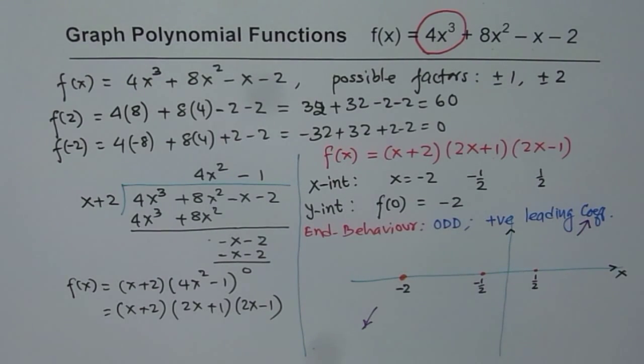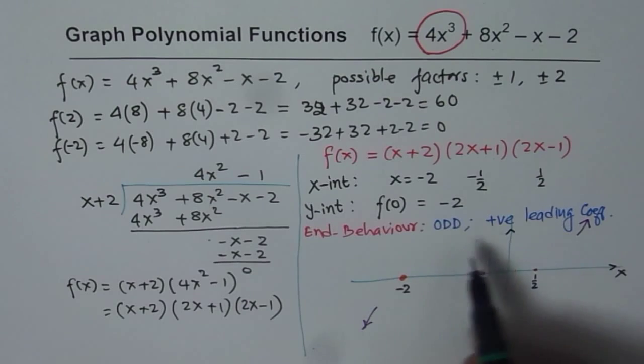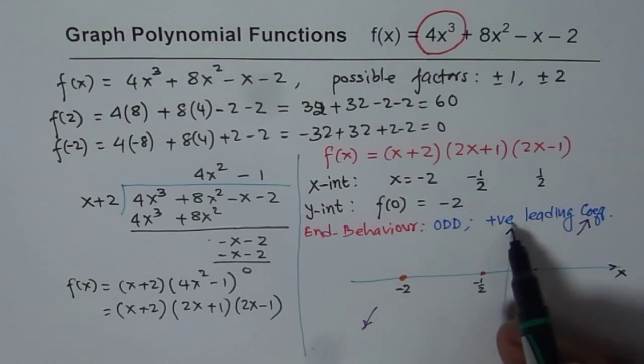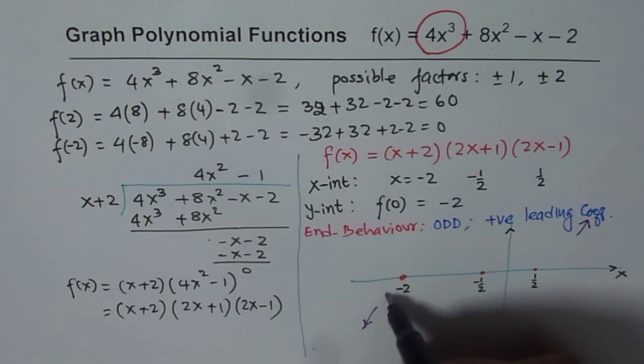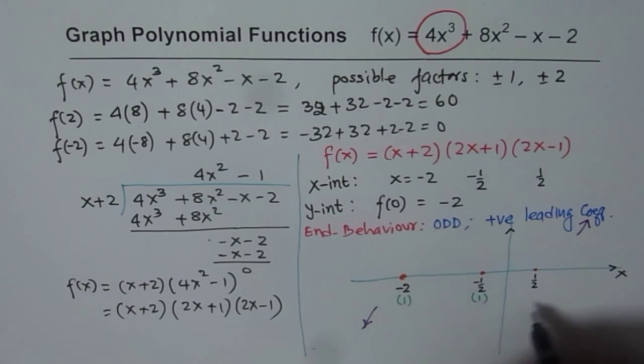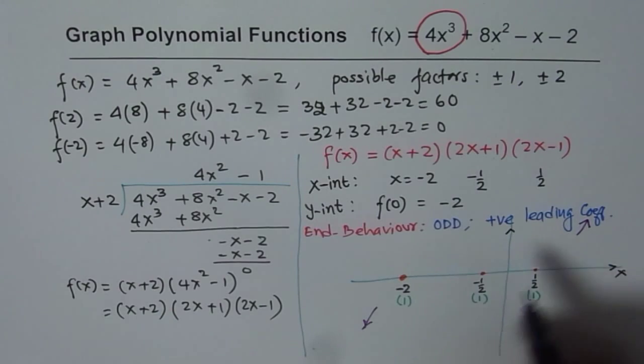Now, let's try to sketch the graph. To sketch the graph, what we will do is, we have to actually move from quadrant 3 to quadrant 1. That is how we have to move. Since odd degree, opposite ends, positive leading ends up in quadrant 1. So remember, when you move, you have to go straight from the zeros, because they are all linear zeros. So multiplicity is 1. Their multiplicity is 1. So you should not be turning. You have to just cross them. And that is how the graph should be.